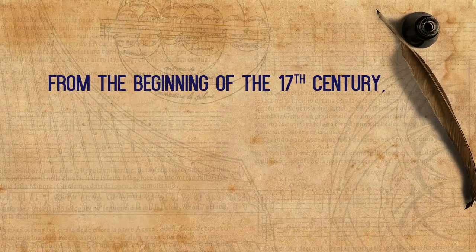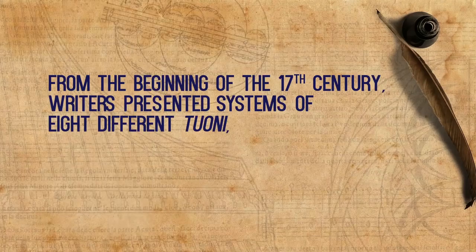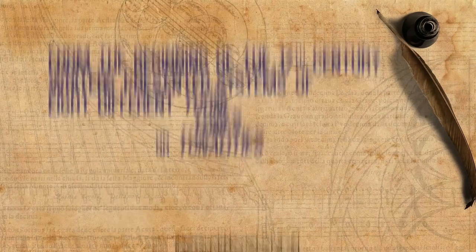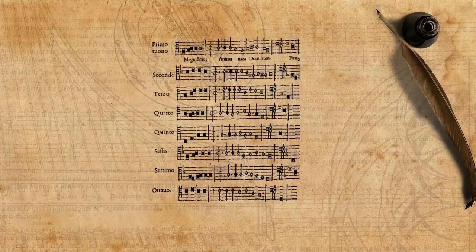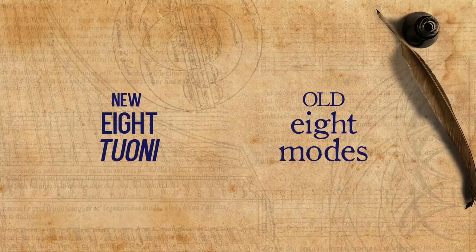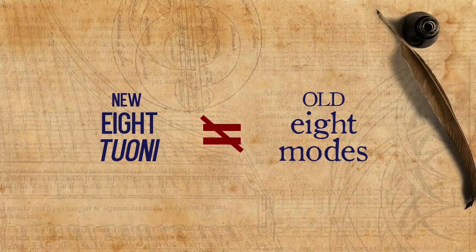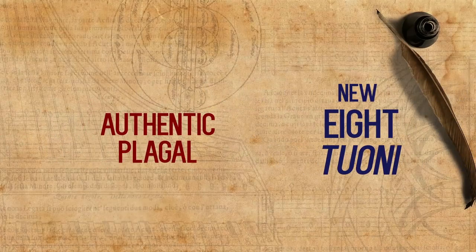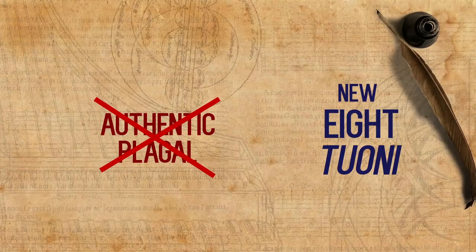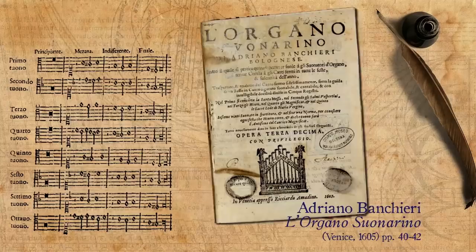The theories we have presented up until now are either from the 16th century or later, but based on influential 16th century sources such as Glareanus or Zarlino. While these theories were still circulating in the 17th century, a new trend in mode theory started to emerge. From the beginning of the 17th century, writers presented systems of eight different tuoni — tones or tonalities — which were based on the chant tones and their usual transpositions. They were similar to the traditional eight modes, but with some apparent differences. Most noticeably, one no longer made the distinction between authentic and plagal modes. One of the early examples of this is found in Banchieri's 1605 L'Organo Suonarino.